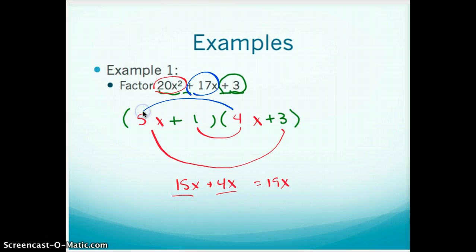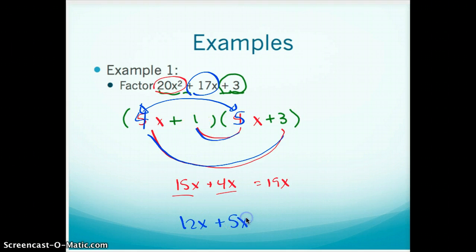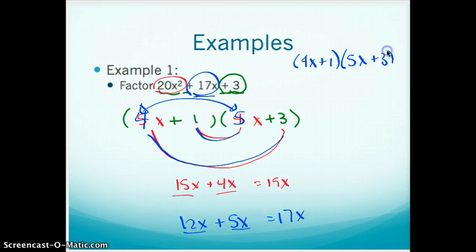So what I would try next, probably, is switching the 5 and the 4. And instead of putting 5x there and 4x there, I'd start with maybe 4x here and 5x here. Then when I try it, 4 times 3 is 12x. 1 times 5x is 5x. And conveniently, 12x plus 5x is 17x, which is what I want that middle term to be. So it looks pretty promising, I would say, that 4x plus 1 times 5x plus 3 gives me the right product.